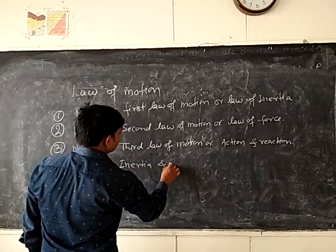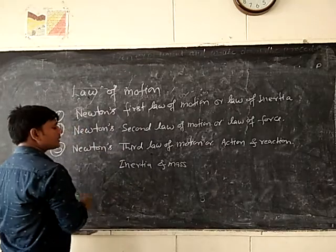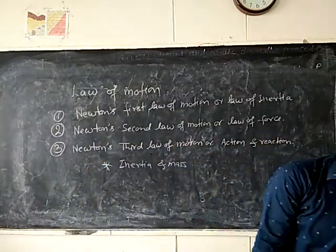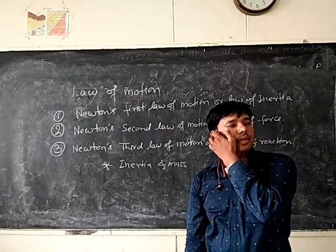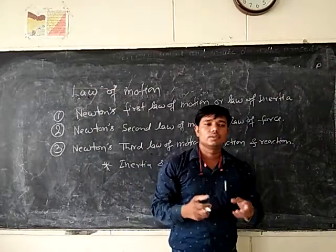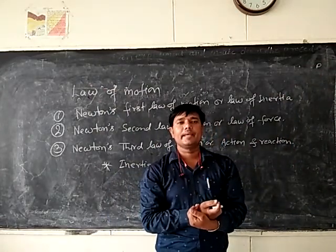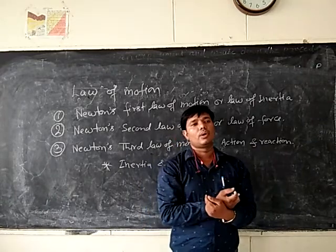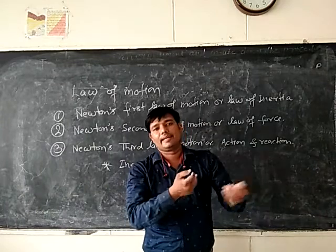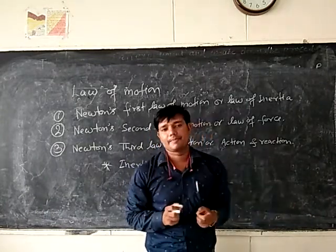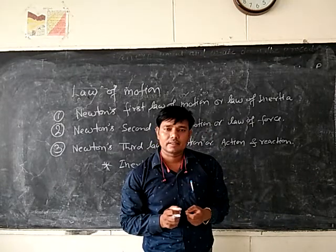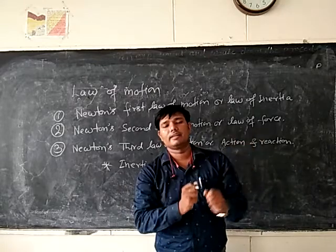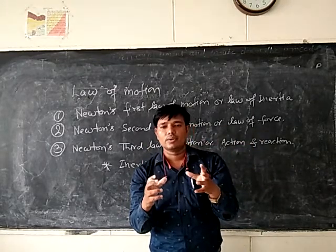Inertia and Mass. This topic is about to talk about inertia and mass. If you have two bodies — one mass is bigger and the other mass is less — and we both roll them, then you can see the small sphere travels a long distance.